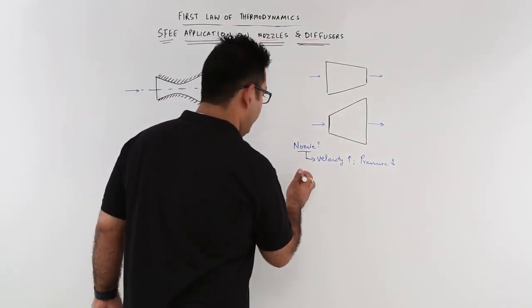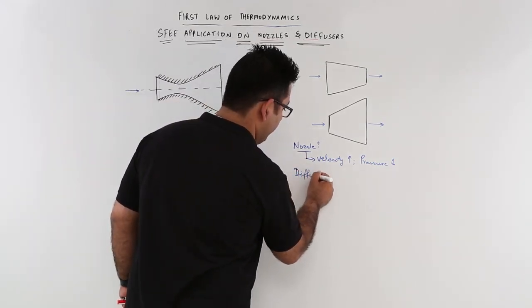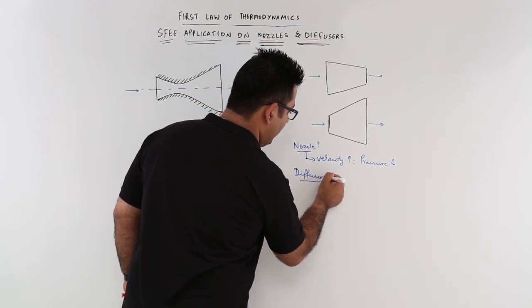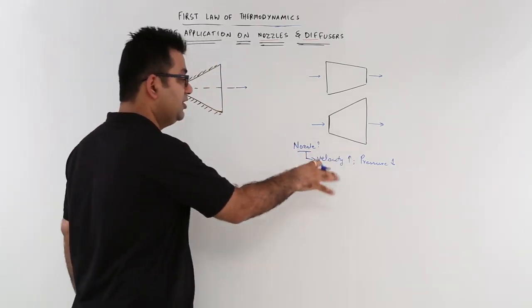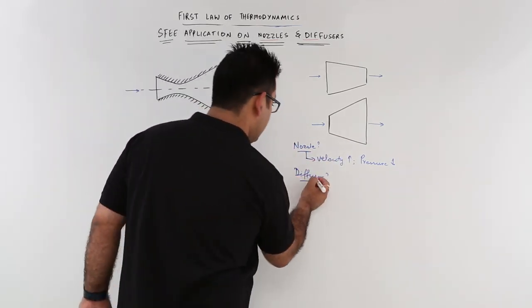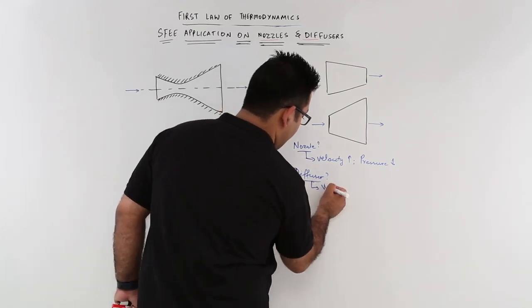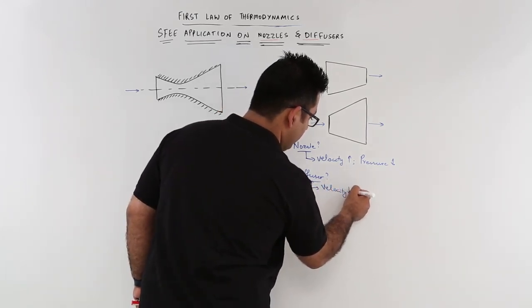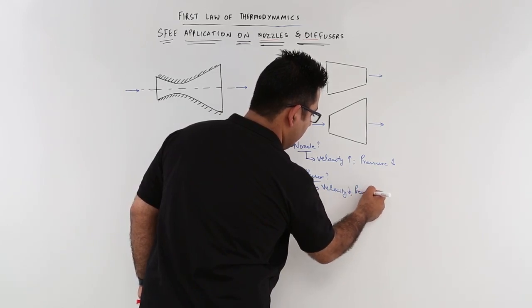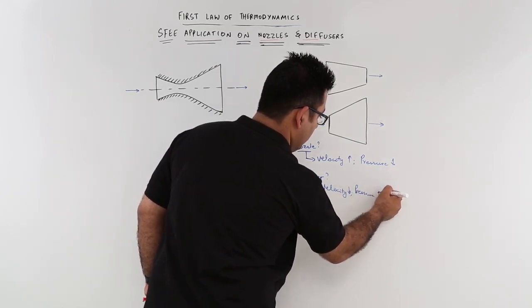Now we come to the second one, which is diffuser. What is a diffuser? It is the opposite of the nozzle. So in a diffuser, the velocity decreases and the pressure increases.